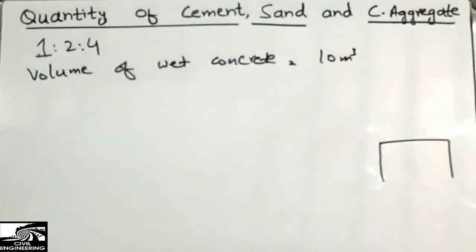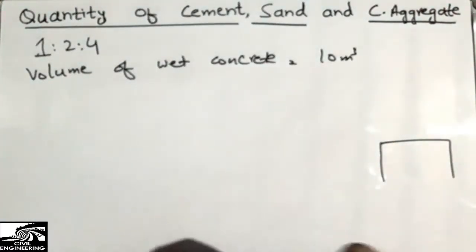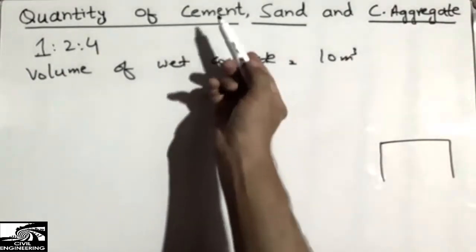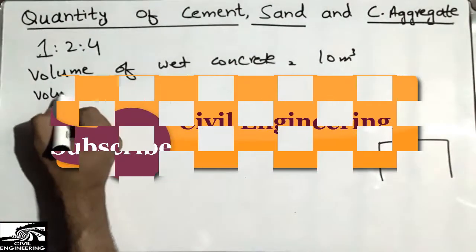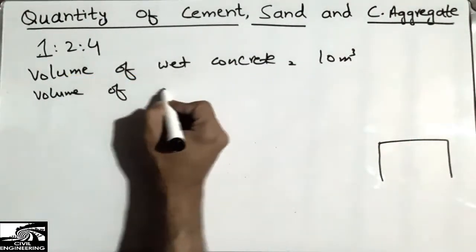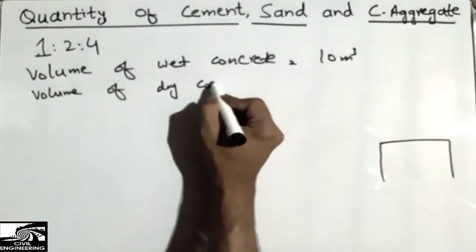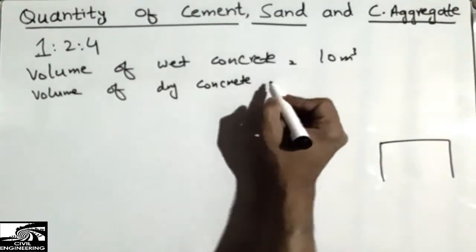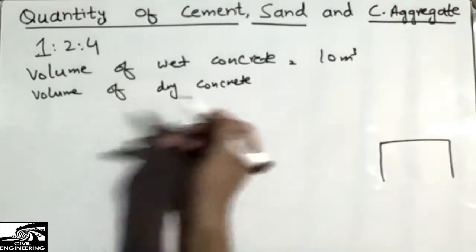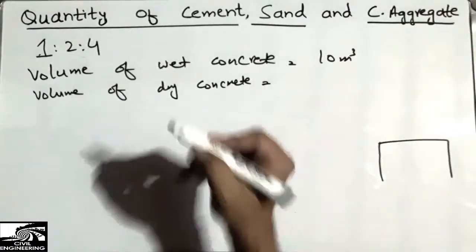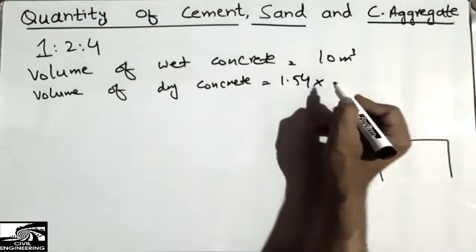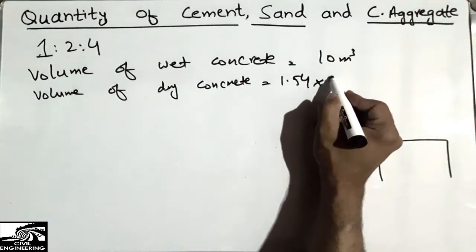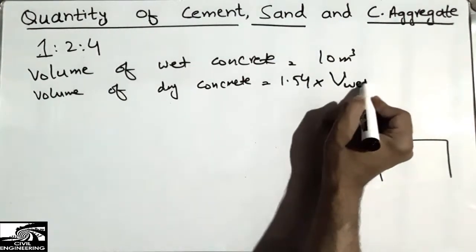The first thing we need to do is find the volume of dry concrete. This is a very important step. The volume of dry concrete is equal to 1.54 multiplied by the volume of wet concrete.